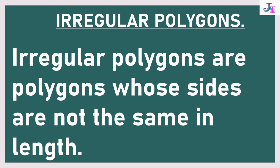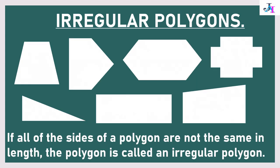Let's take a look at some irregular polygons. Here are irregular polygons. They are irregular because their sides are not equal and not the same length.